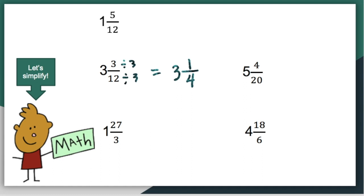Let's move on to the next example: five and four over twenty. Four and twenty have a common factor of four, so we'll divide the numerator and the denominator by the same number. Four divided by four will give us one. Twenty divided by four is five. And we still have a whole number there. So five and four over twenty is equivalent to five and one-fifth.